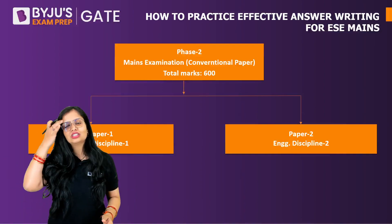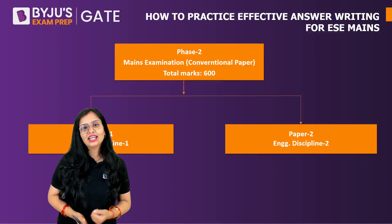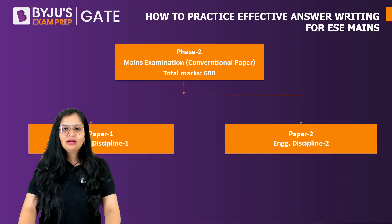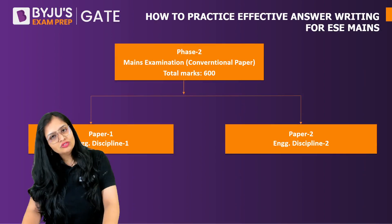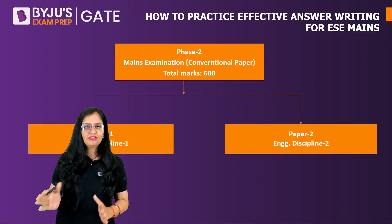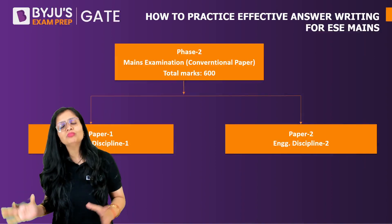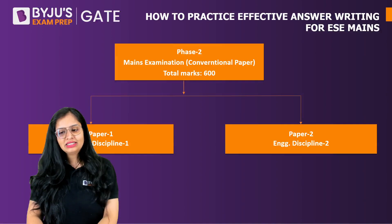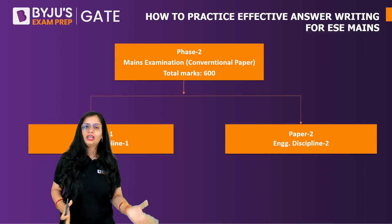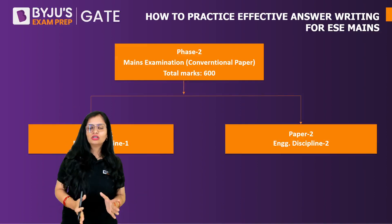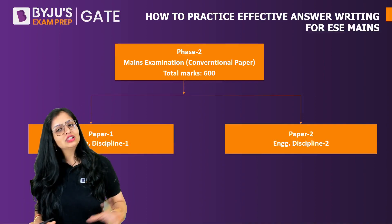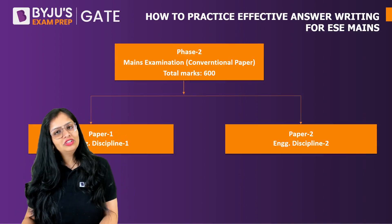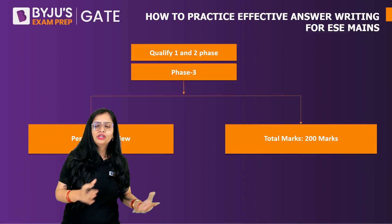In the conventional examination, it's not like tick-marking answers in a small space. You have to show design steps and write everything in a proper format. This mains paper is of 600 marks total — Paper One and Paper Two are each 300 marks, both regarding your engineering discipline. The whole syllabus is split: a part is in Paper One and a part in Paper Two. You will be told which subjects fall under which paper, so no need to panic.